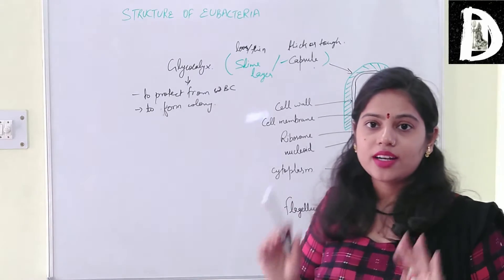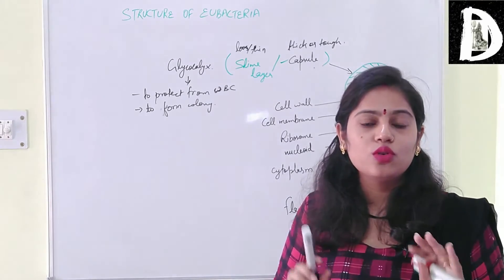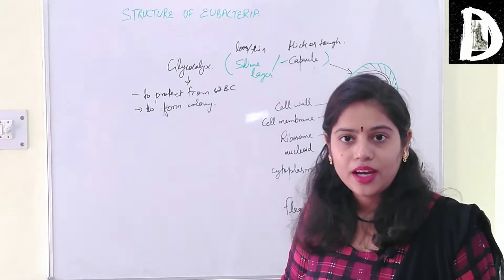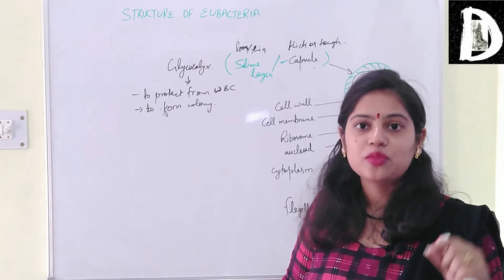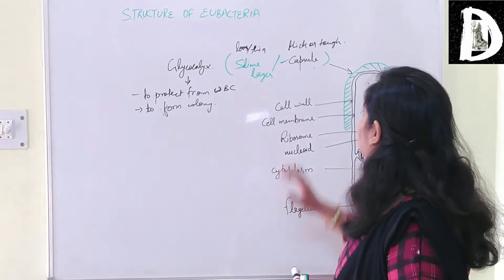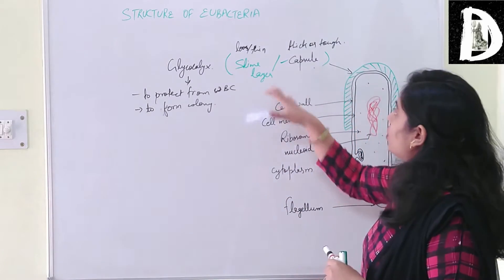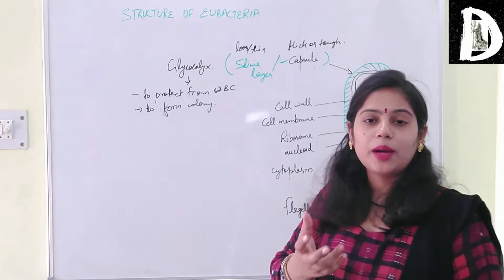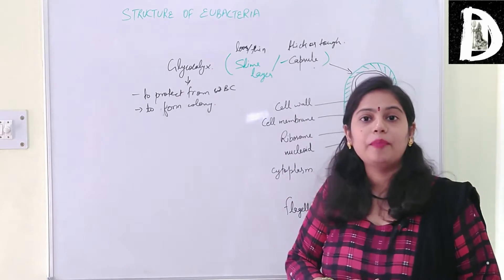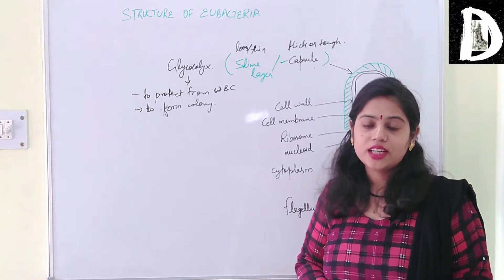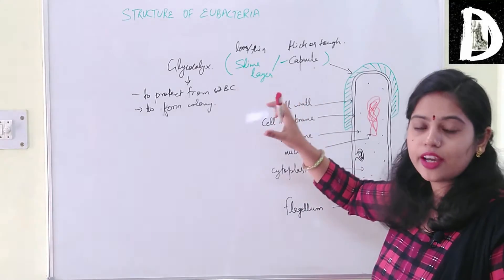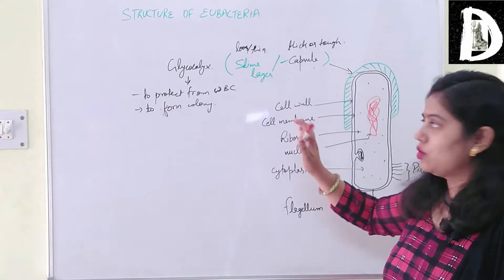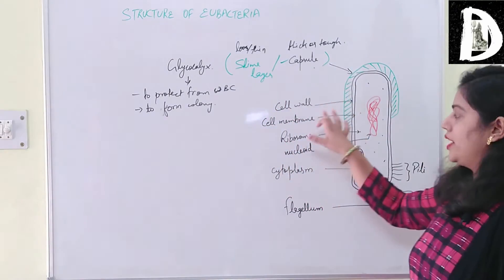If a bacterial cell has a capsule, it is called capsulated bacteria. Most capsulated bacteria are pathogenic. As long as a capsule is present, those bacteria are mostly pathogenic.